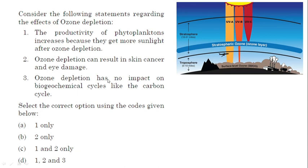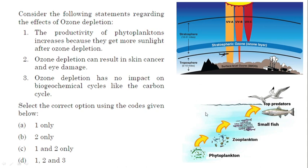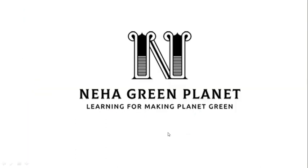Regarding statement three — ozone depletion has no impact on the carbon cycle — a portion of the carbon cycle also operates in aquatic ecosystems. If phytoplanktons are affected by UV exposure, then the next trophic levels — zooplankton, fish, and top predators — will not receive sufficient carbon, and therefore the carbon cycle will also be affected. So statement three is also incorrect. The correct answer is second only. With this, we have completed productivity of ecosystem. Keep watching Neha Green Planet for more information on environment. Thank you.